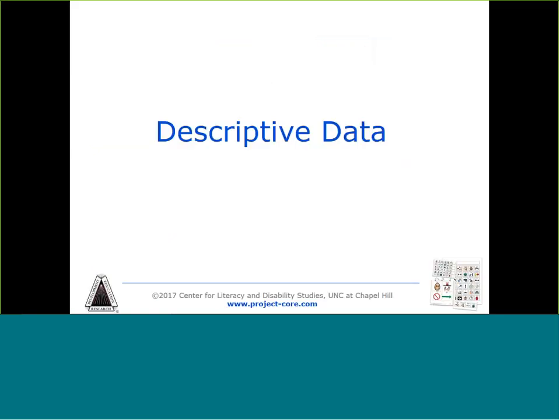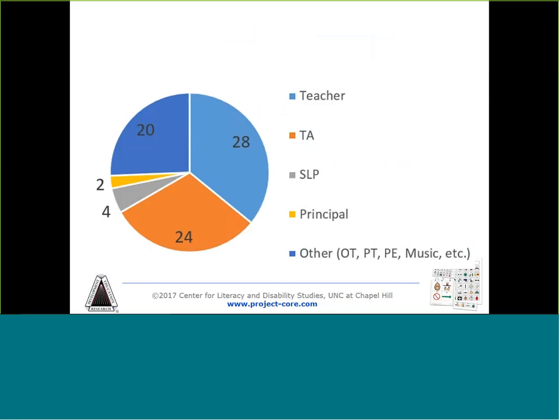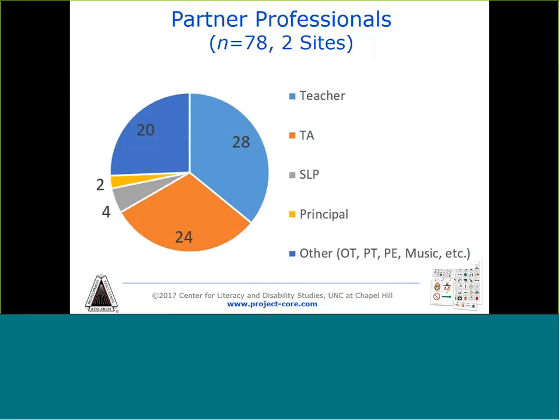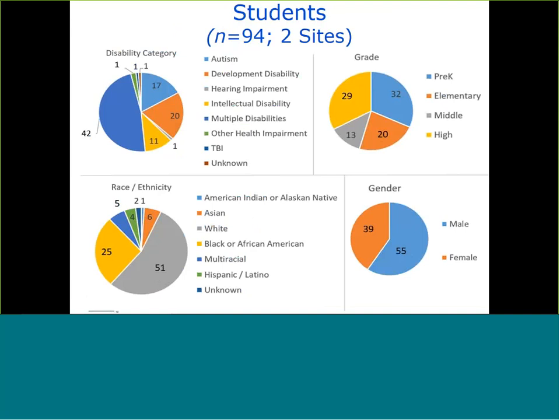I'd like to spend the remaining time sharing some insights and descriptive data gathered during the first two years of the project. During the first two years, we worked with two school sites as development partners, focused on defining and creating the initial set of professional development modules and implementation resources. The majority of participants were teachers or teaching assistants, along with four speech-language pathologists, two principals, and 20 additional related service providers ranging from OTs to PTs, adapted PE, music, and art. We have over 200 students who have participated in the project to date, and we've been able to collect pre- and post-year data on 94 students across two school sites.